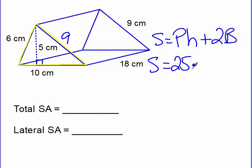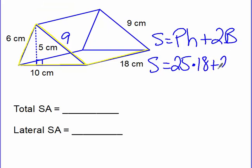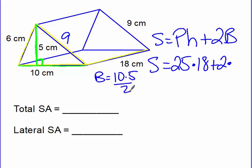Now we need the distance between the bases, which is 18. So times 18 plus 2 times — now we need to find the area of the base. Just like in the last one, we're looking for the base of the triangle times the height of the triangle, which are the ones touched by the right angle. That is our 10 and 5. So for our capital B, it's going to be base times height divided by 2: 10 times 5 divided by 2 gives us 25 for the area of the base.